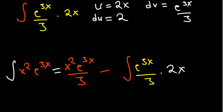With u equal to 2x, our du is 2. To find v, we integrate dv: integrating e to the power 3x over 3 means dividing by the derivative of 3x which is 3, giving 3 times 3 equals 9 in the denominator, so v equals e to the power 3x over 9.